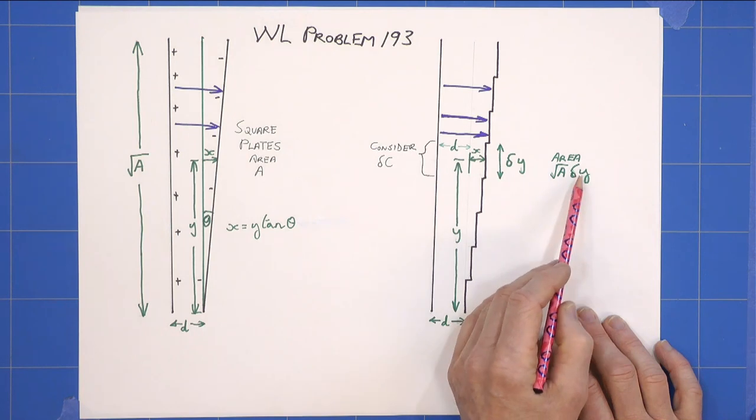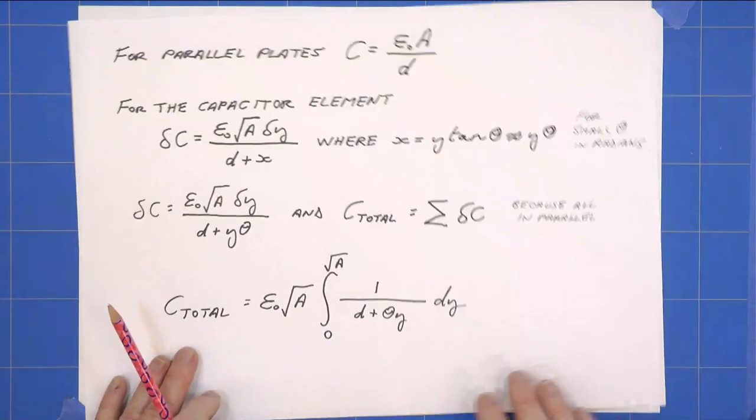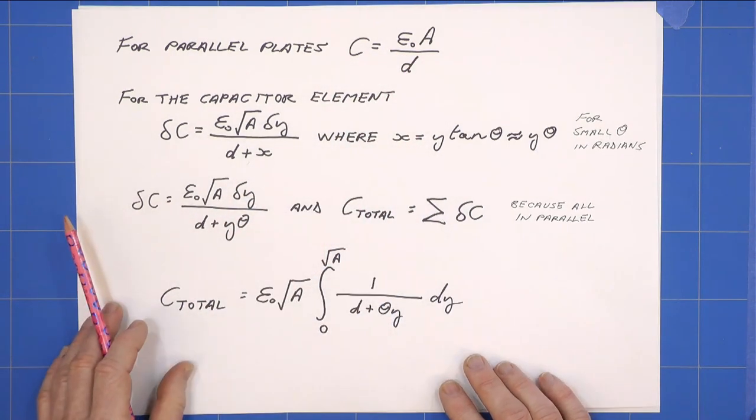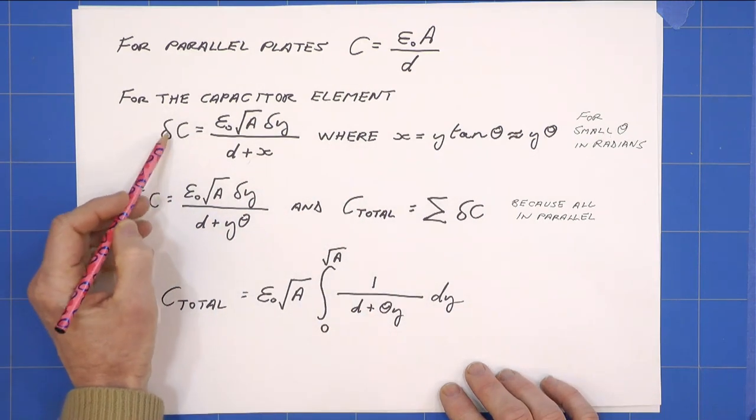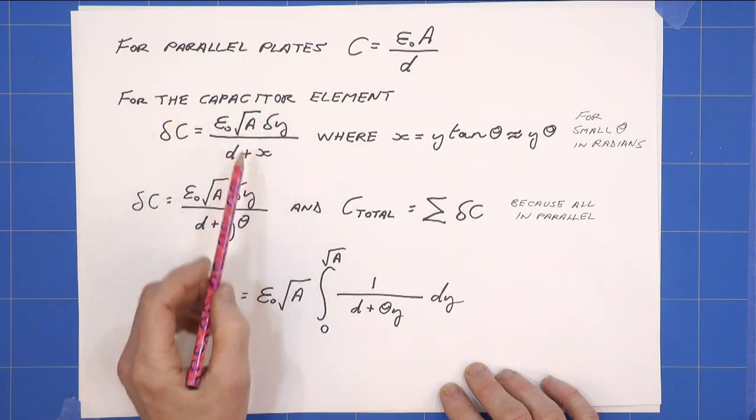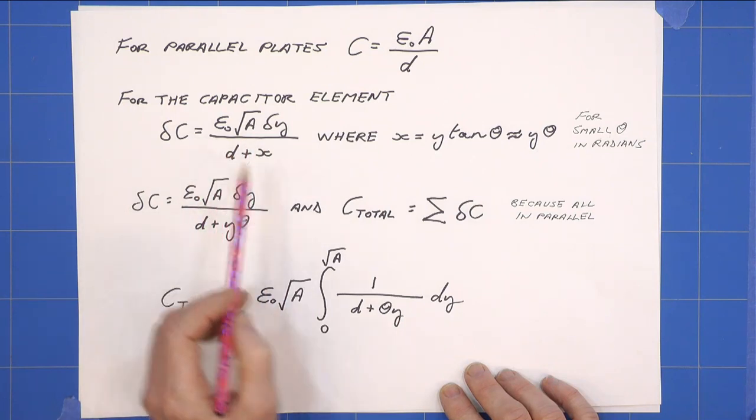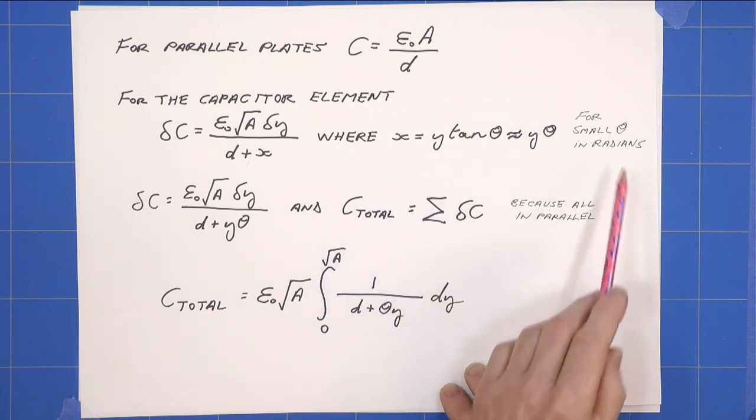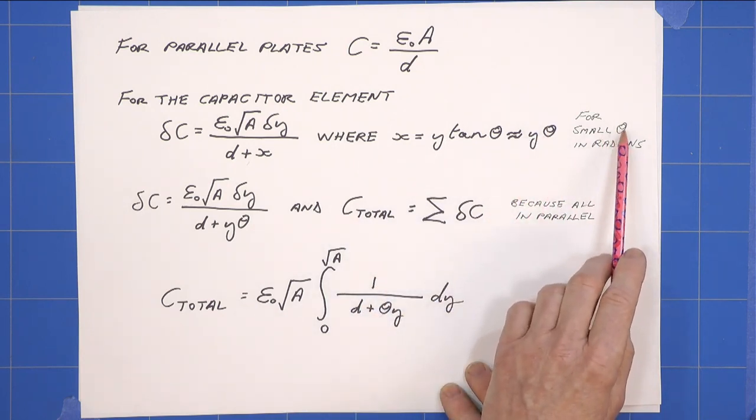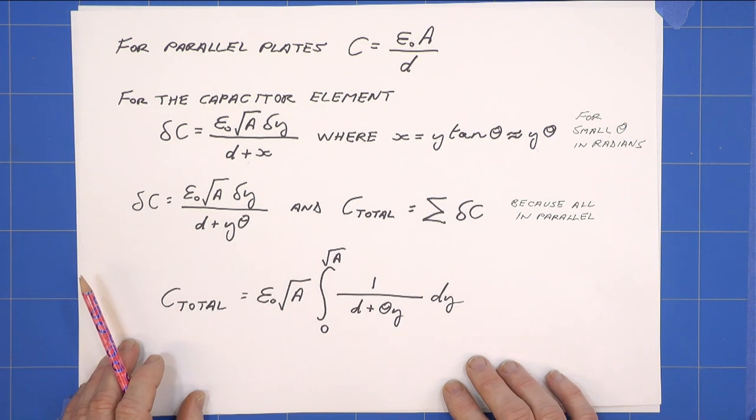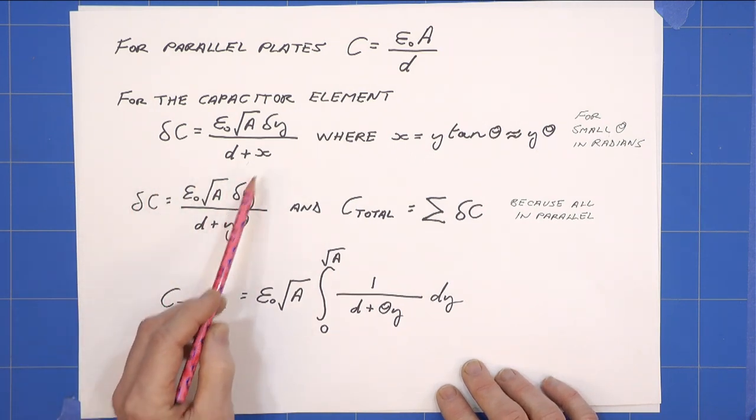And it has an area root A delta Y, the root A being that way. Okay, for parallel plate capacitors we know that capacitance equals epsilon naught A over D. For the elemental capacitor, that then gives us delta C equals epsilon naught root A delta Y, which is the area of the little capacitor, over D plus X, which is the new separation where X equals Y tan theta. But we can use the approximation X is approximately Y theta. But do remember, if you put numbers in, you need to use radians, not degrees, for that approximation.